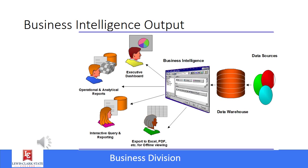Static, as the term implies, doesn't change. If I send out a PDF or Excel spreadsheet representing the data as it was when sent, that is a static report. Dynamic can be in real time — a dashboard is an example of a dynamic report because it reflects the data as it is at that very second, and if you do a refresh it would possibly change.